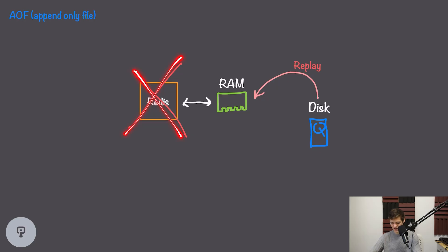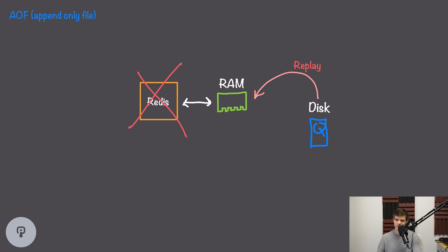AOF is super useful in some situations — for example, if we accidentally send the FLUSHALL command, which deletes all the data, we can simply stop the server, remove the FLUSHALL command from the end of the append-only log, restart the server, and Redis will rebuild the entire database without that command. If our Redis instance fails, we read the entire append-only log from disk and replay every command, essentially re-running all commands in sequence at startup. This gives us strict control over what commands run, but it can take time at startup, especially with a large database.